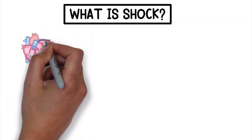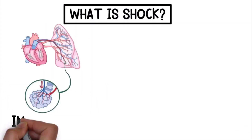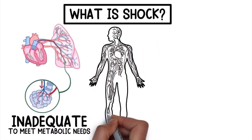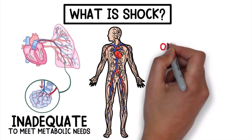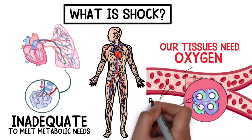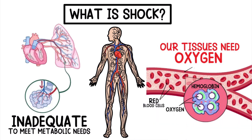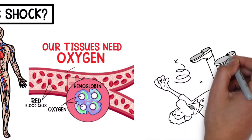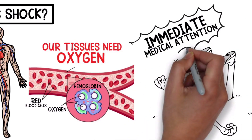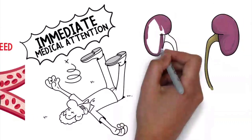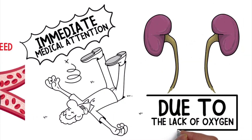What is shock? Shock is a condition in which perfusion to the tissues and vital organs is inadequate to meet metabolic needs. Life cannot be sustained without adequate flow to the tissues because our tissues need oxygen, and oxygen is transported in red blood cells while bound to hemoglobin. Shock is a potentially life-threatening state that requires immediate medical attention because it can cause a patient to deteriorate rapidly. Permanent damage to internal organs can occur due to the lack of oxygen.